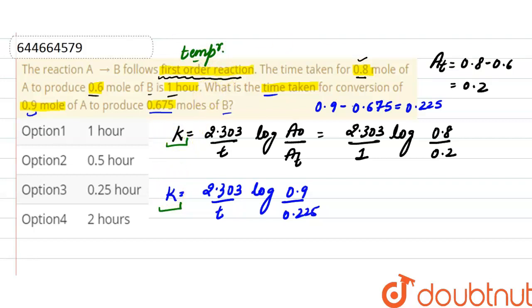So we'll equate both equations. This will be 2.303 divided by time 1, log of 0.8 divided by 0.2. Here this 2.303 will cancel out, and here log of 0.9 divided by 0.225.